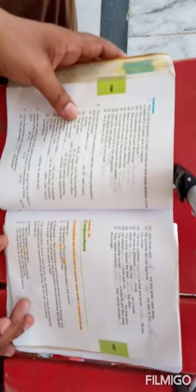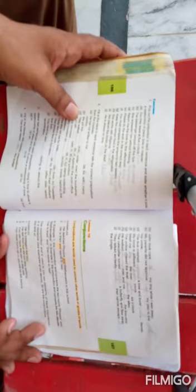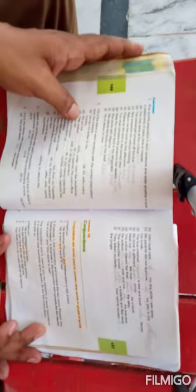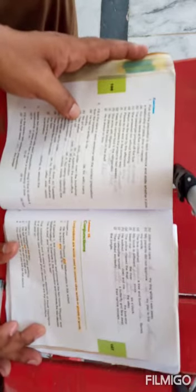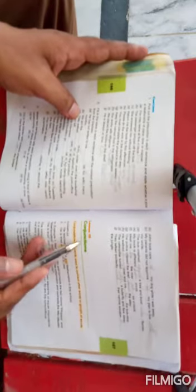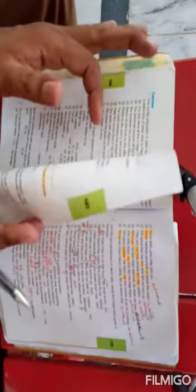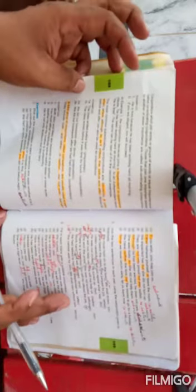Bismillahirrahmanirrahim, dear students, assalamu alaikum. Class 6 lecture, you come lesson number is 15 conjunctions. We have done previous two lectures of this lesson. Today we are going to start third lecture of this lesson.